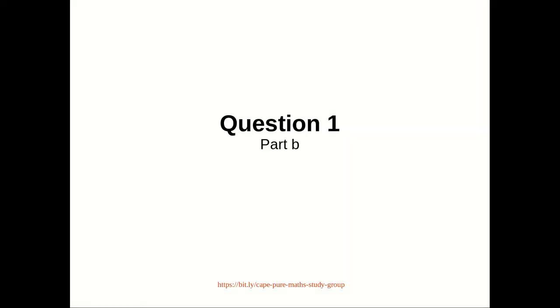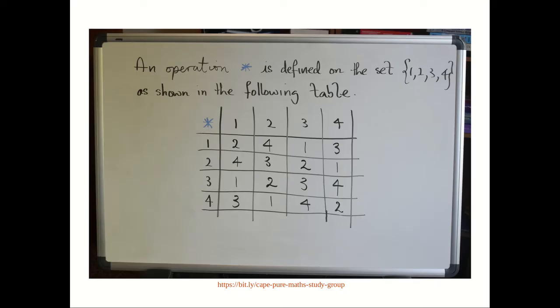Okay, so we have question 1, part b here. We're given an operation that is defined on a set containing 1, 2, 3, and 4, and we are given a multiplication table for star, as seen in the image that I have here.